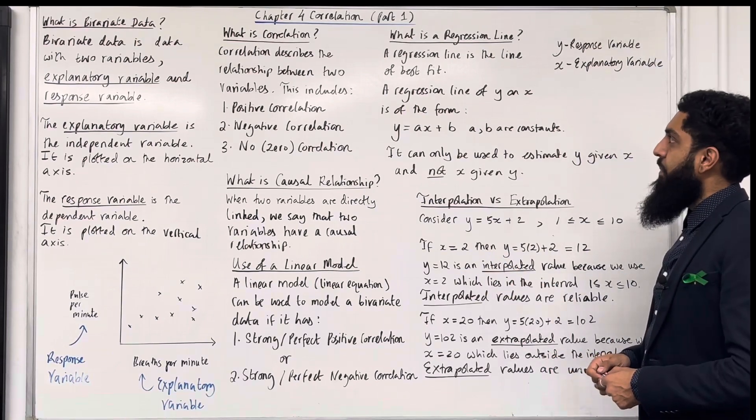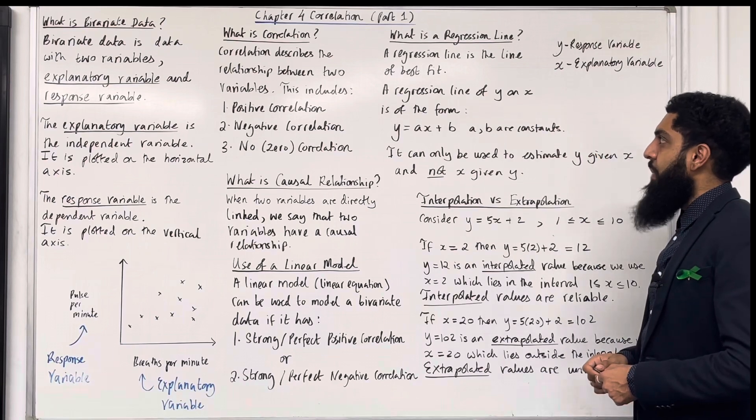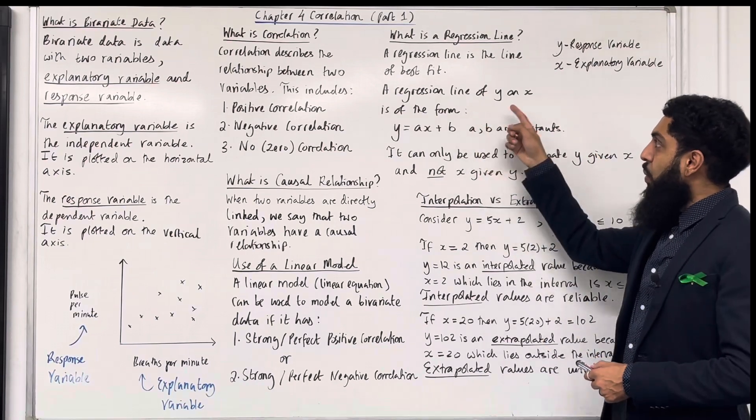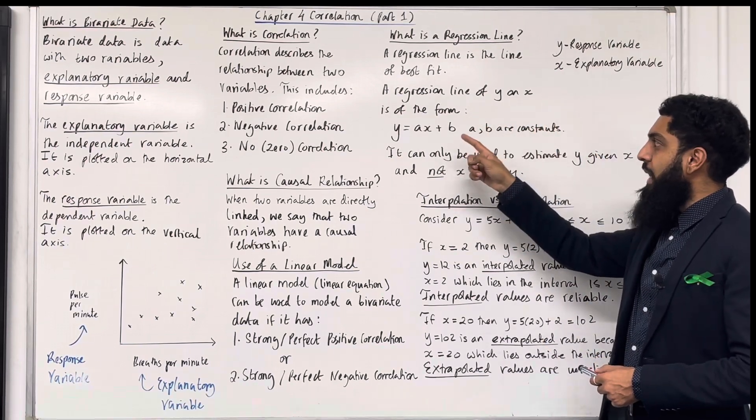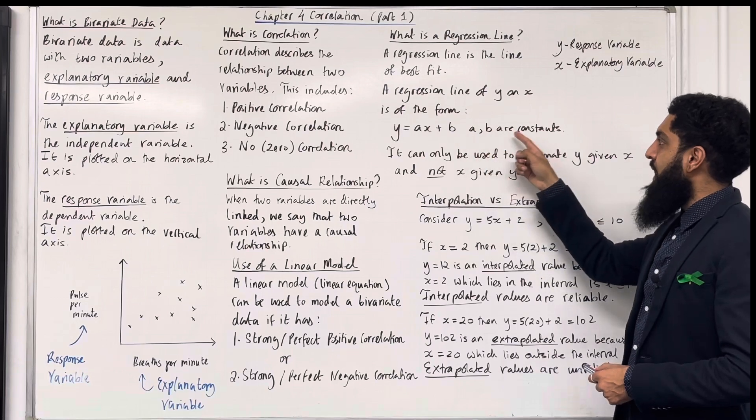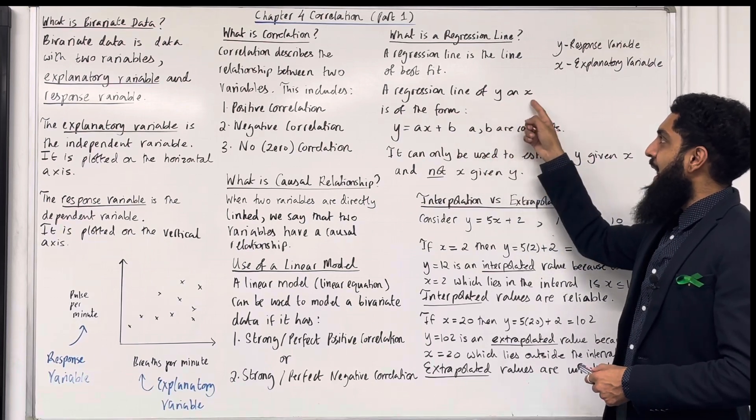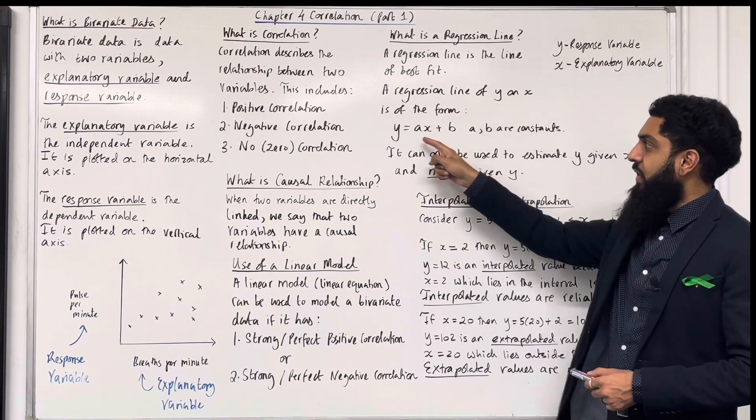What is a regression line? A regression line is a line of best fit. A regression line of y on x is of the form y equals ax plus b, where a and b are constants. If it's y on x, y has to be the subject, as you can see over here.